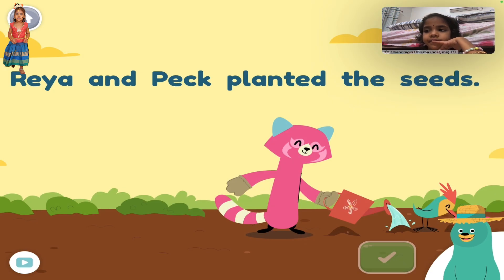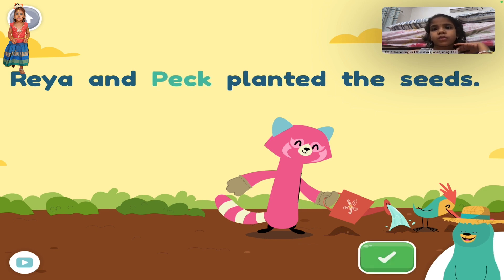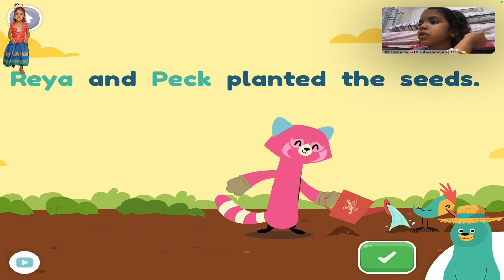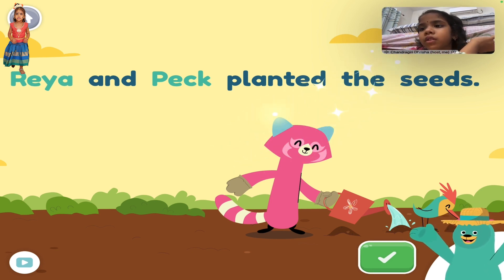Find the proper nouns in the sentence: Raya and Peck planted the seeds. Peck. Raya. Nice!